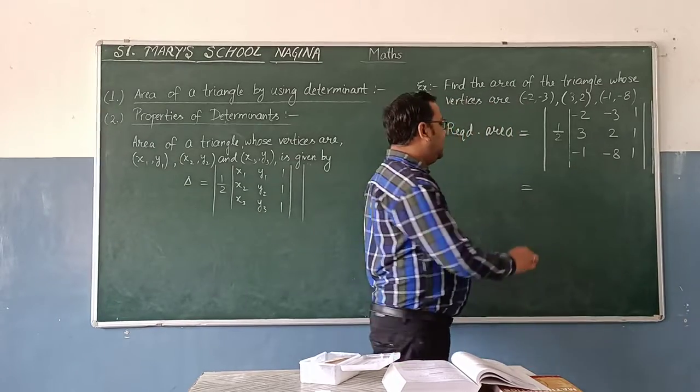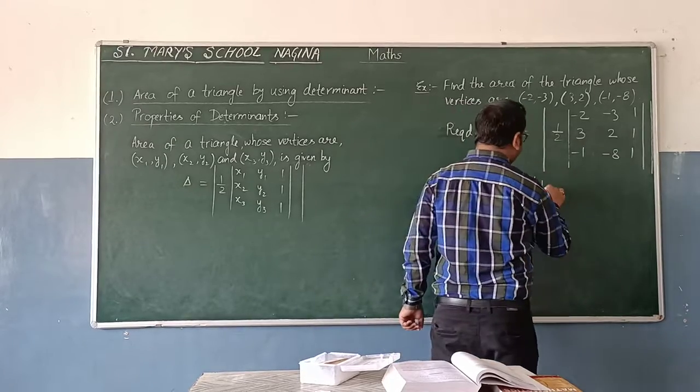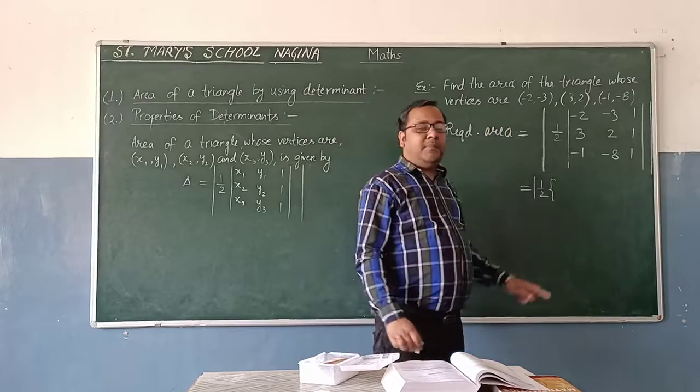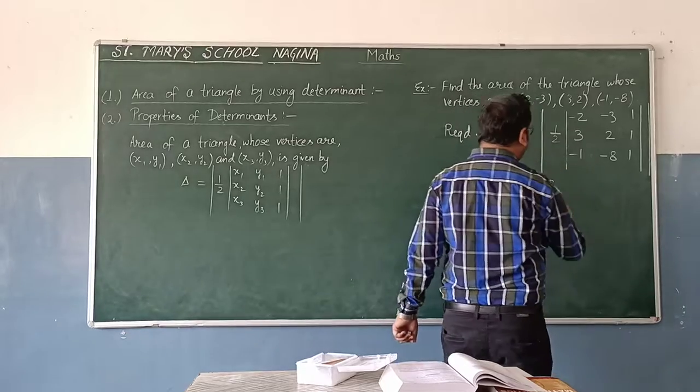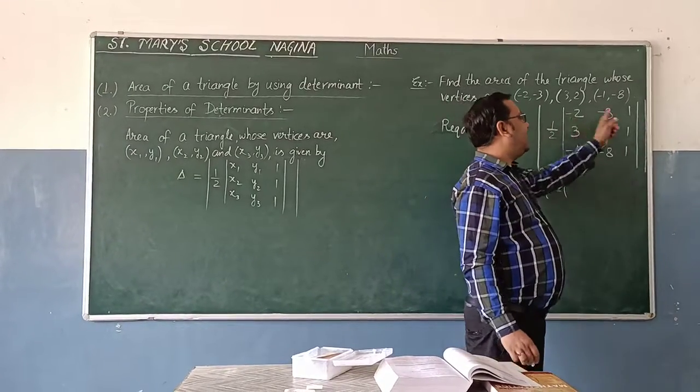Now, inside the modulus, you expand. 1 upon 2, expand this determinant by any row or column. You can expand this determinant. By first row, I am expanding. Minus 2 into, now, you delete first row and first column.